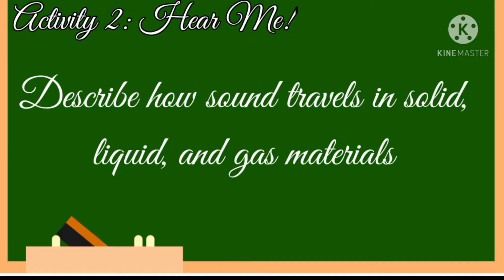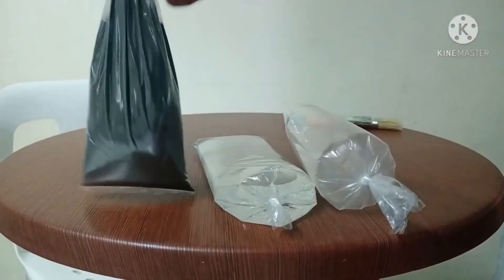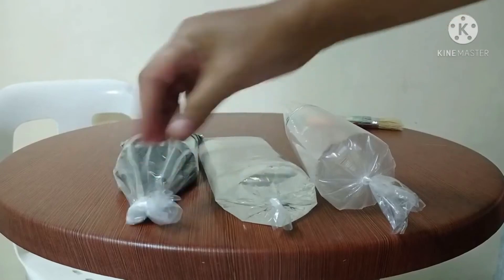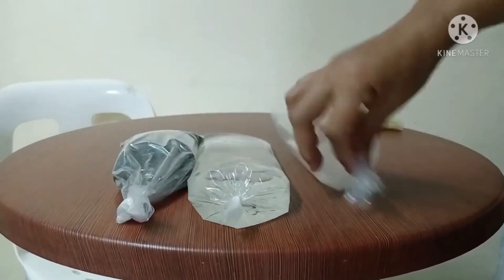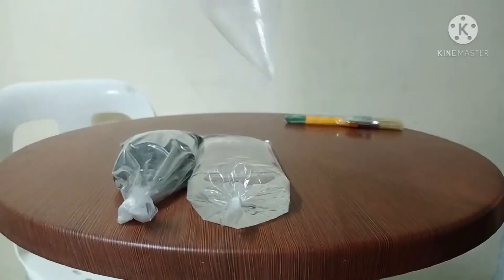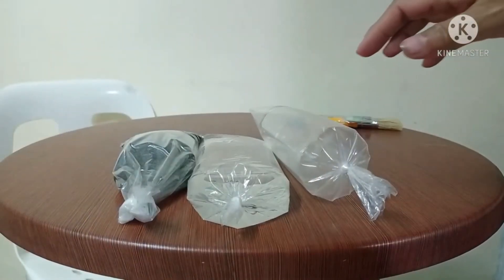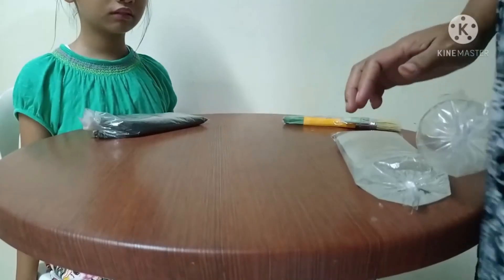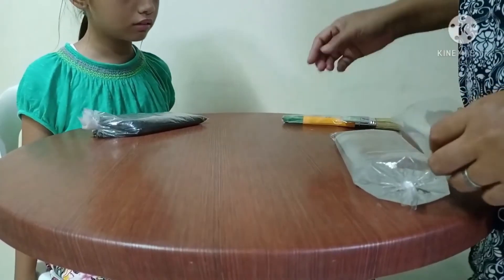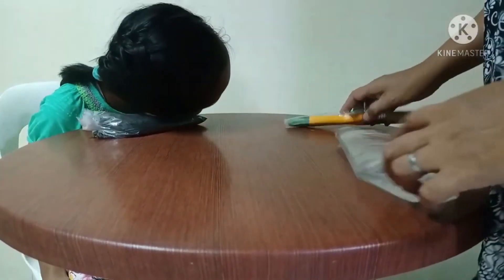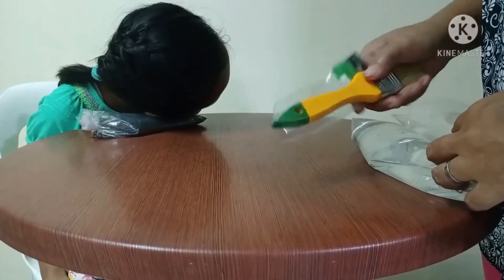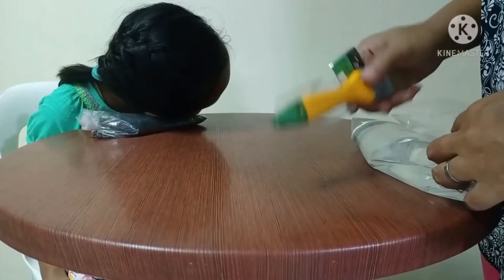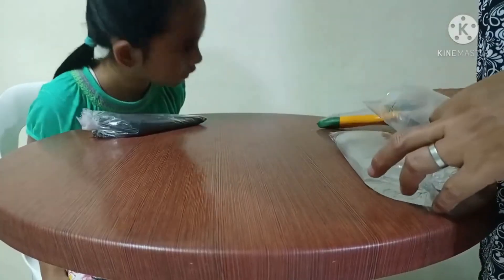These are the materials needed in this activity: three clear plastic bags, sand, water, and air. Half fill the first plastic bag with sand, the second with water, and the third with air. Tie them. Place the plastic bag with sand on top of the table and put your ear on it. Ask your family member to tap the table and listen to the sound it produces.